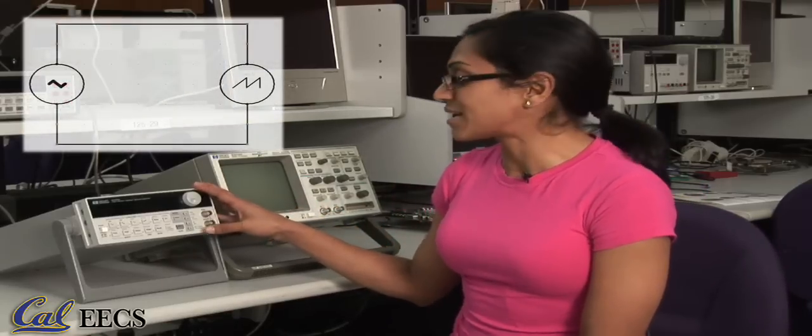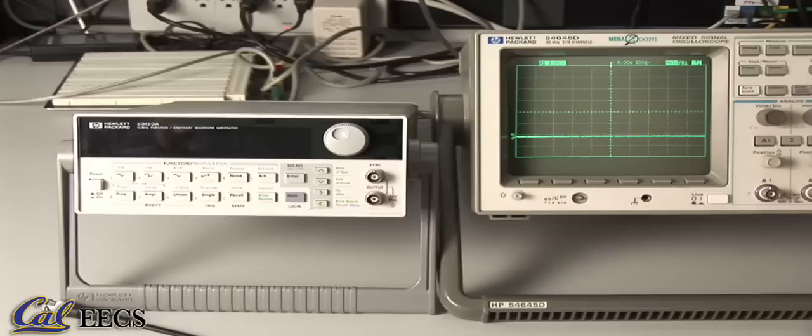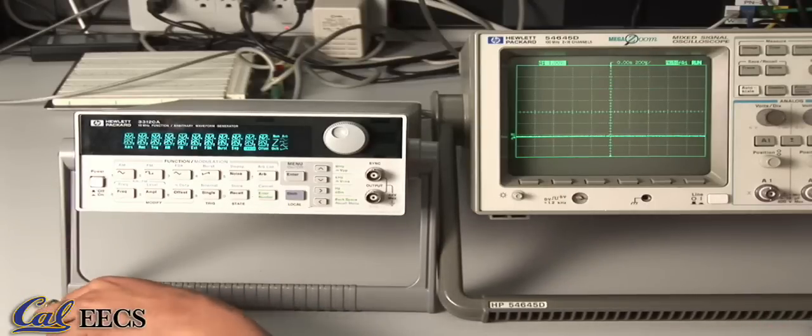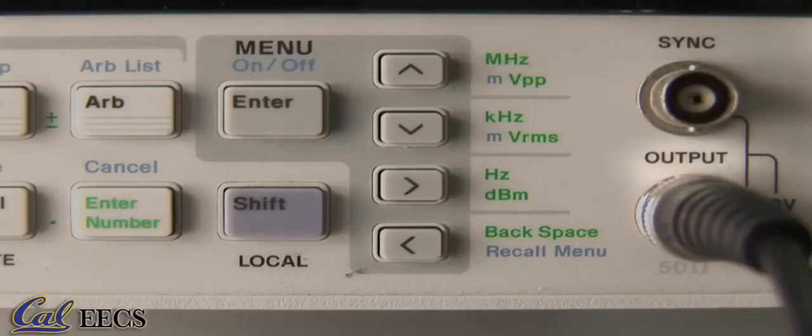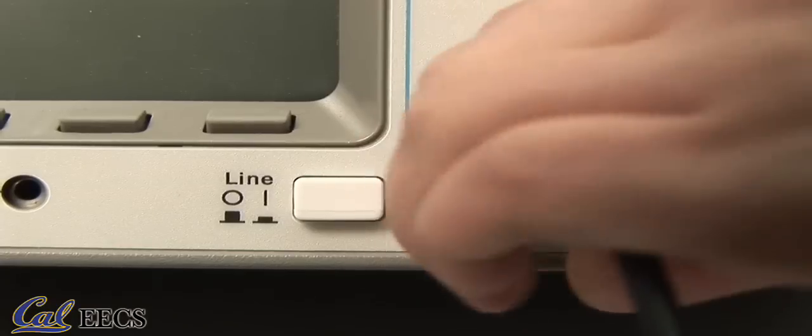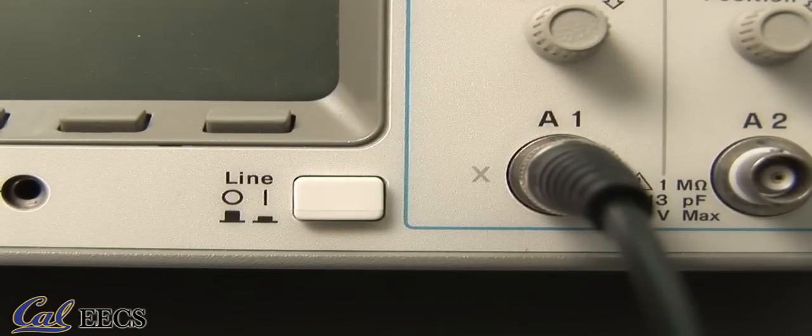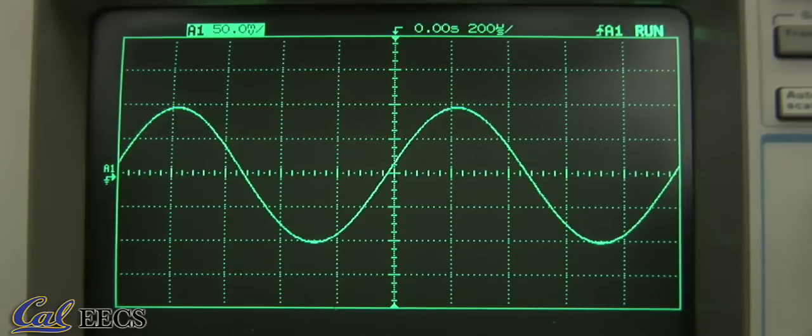In order to show you how a function generator works we will connect the output of the function generator into the input of an oscilloscope. Turn the function generator on here, then connect the cable to the output here and we will link it to the oscilloscope like this. The function generator automatically produces a one kilohertz sine wave which looks like this.